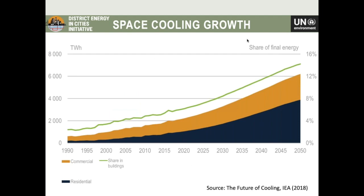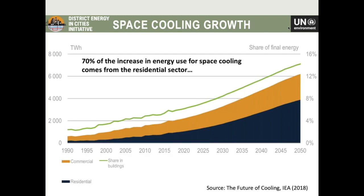What's even more alarming is looking at how this growth will carry on to 2050. Residential cooling is going to grow a lot faster than commercial cooling, so that by 2050 we have a much larger share for the residential sector. Tackling any programs aiming to improve the sustainability of cooling — we really need to focus on the residential sector. This is one of the purposes of today's webinar: looking at how we can bring district cooling to tackle this huge growth. 70 percent of the increase in energy use for space cooling is going to come from the residential sector.